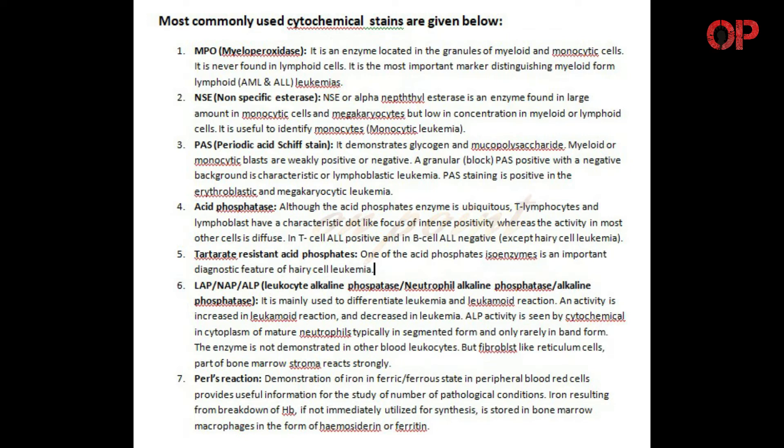1. MPO - Myeloperoxidase is an enzyme located in the granules of myeloid and monocytic cells. It is never found in lymphoid cells. It is the most important marker distinguishing myeloid from lymphoid, AML and ALL leukemias.